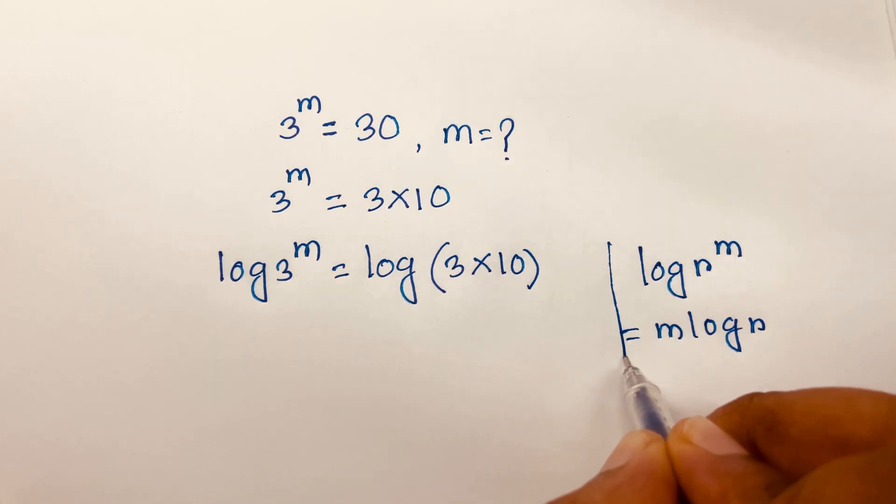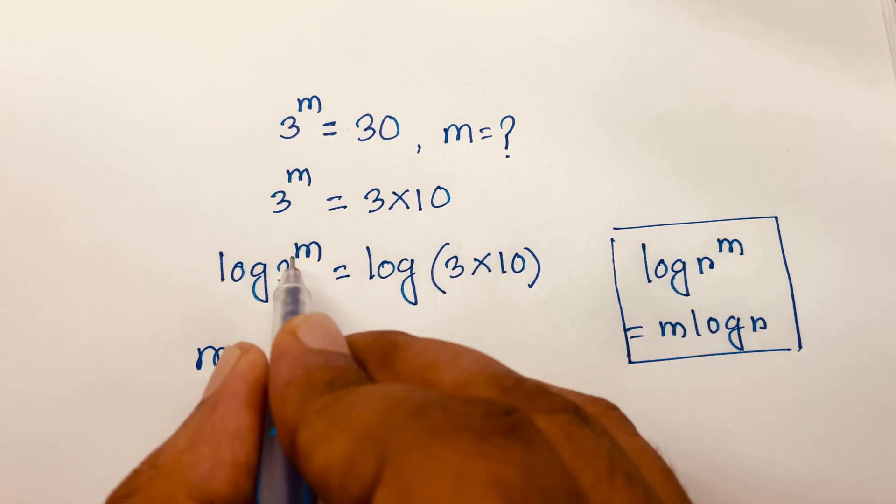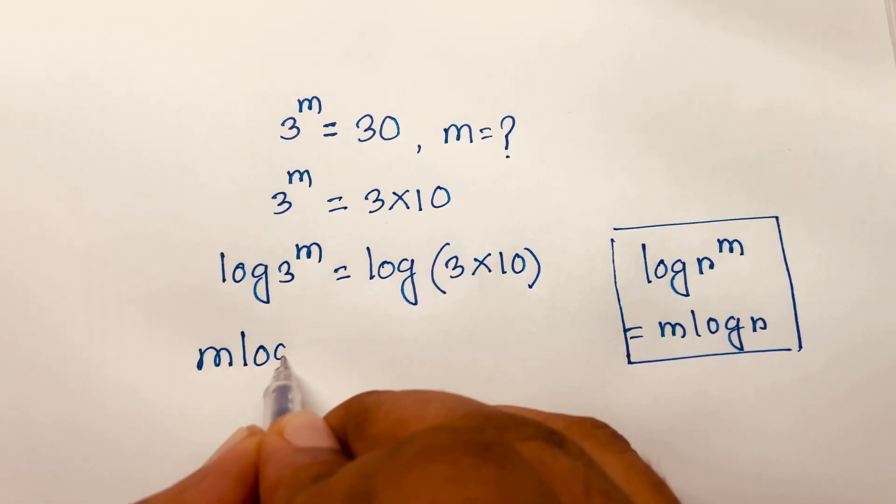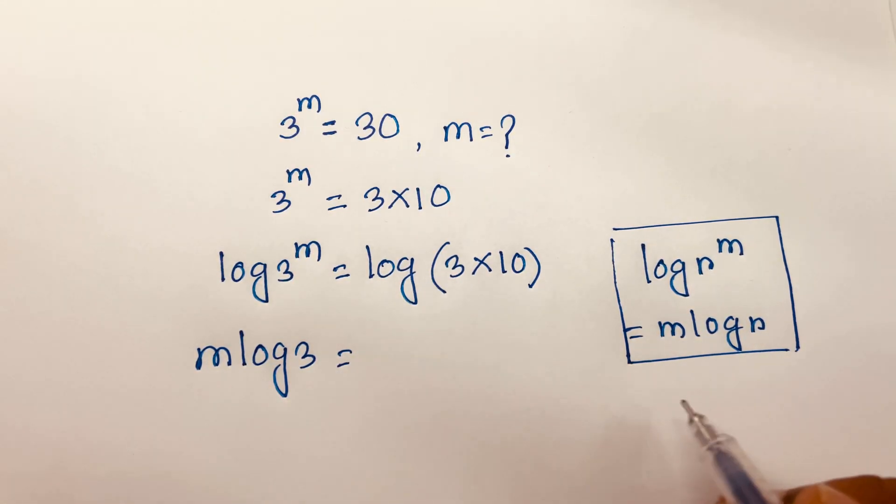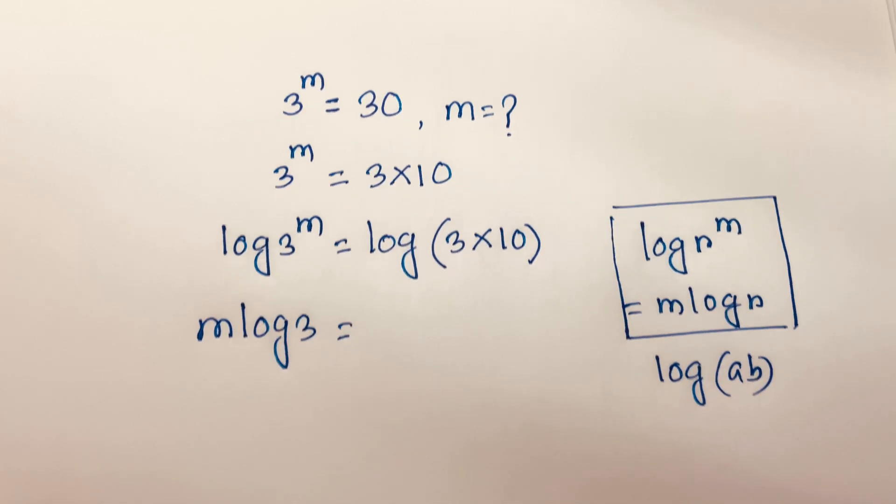According to this rule, I can move the exponent m to the front, so it will be m log 3. On the right side, we know that log a times b equals log a plus log b.